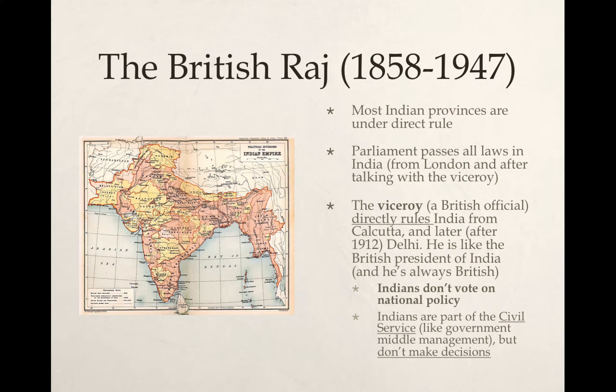The British government was set up with a viceroy who directly ruled India in Calcutta, and then after 1912 in Delhi. In some ways he's like the president of India, but he's British, and the Indians don't get to vote on any kind of national policy. This is not a democracy — this is British imperial rule over hundreds of millions of Indian people.